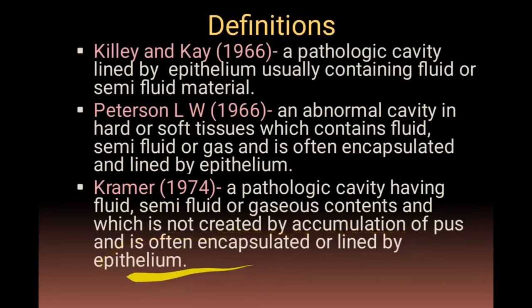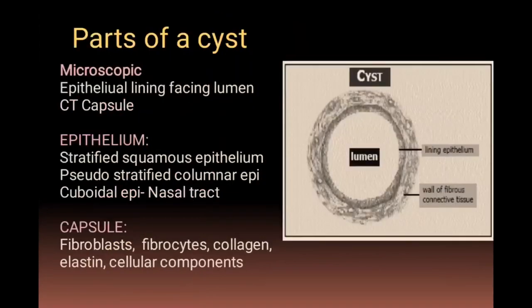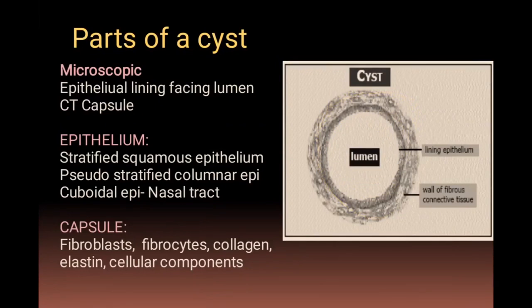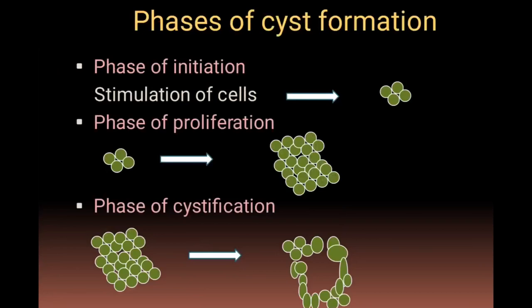The parts of a cyst include a lumen, surrounding epithelium, and a connective tissue capsule. The epithelium is stratified squamous epithelium or pseudostratified columnar epithelium, while the capsule consists of fibroblasts, fibrocytes, collagen, elastin, and other cellular components.